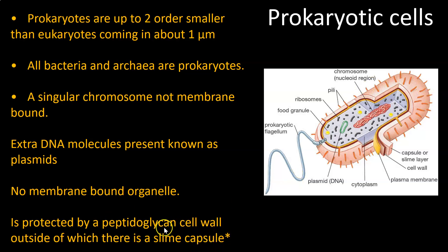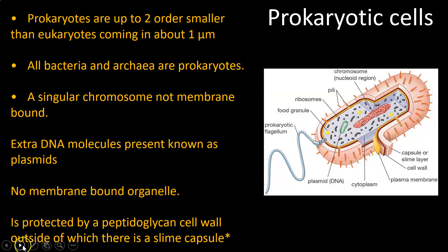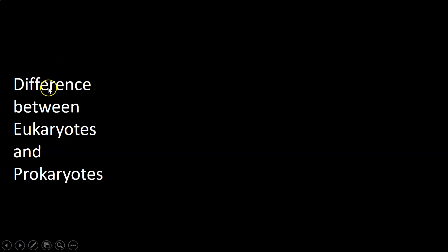Some bacteria also have a slime capsule on the outside — not all bacteria, which is why there's an asterisk. Now let's combine all that information into one bite-size slide and look at the differences between eukaryotes and prokaryotes.